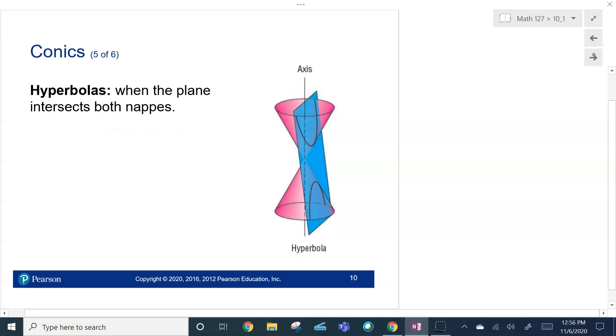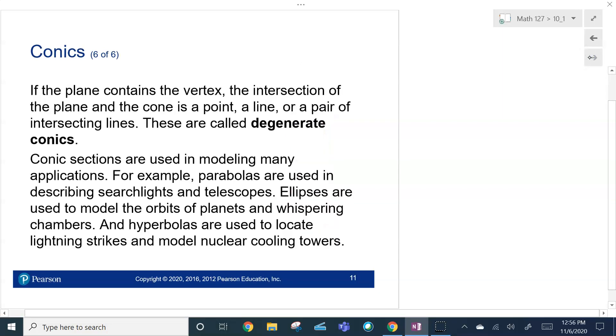Hyperbola. This is when the plane intersects both nappes. So, we've got the hyperbola. We're going to see the shape of the hyperbola right there.